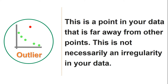Now let's go to the next peculiarity, which is outlier. What is an outlier? An outlier is a point in your data that is far away from other points. You must know that an outlier is not necessarily an irregularity or inconsistency in your data. To detect outliers in cross-sectional data, you need a special kind of chart called a box plot. However, in time series data, you can achieve the same with a simple line chart — the same chart we have been using.